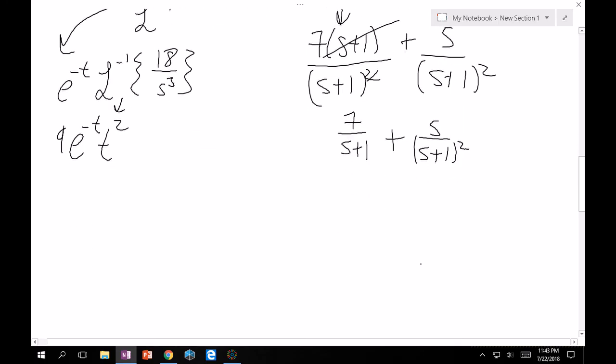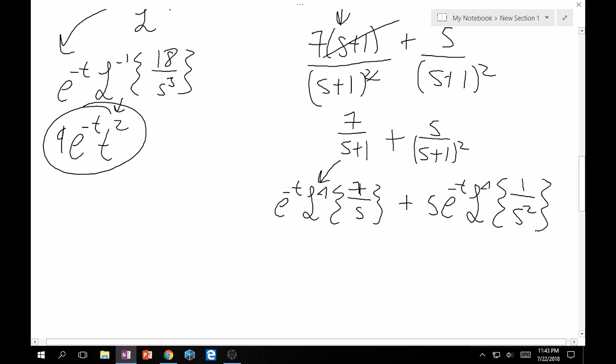This yields 7 over s plus 1 plus 5 over s plus 1 squared. And then these are also easy to take inverse Laplace of. 7 over s plus 1 is e to the minus t times inverse Laplace of 7 over s. And then this is also plus 5 e to the minus t inverse Laplace of 1 over s squared. And so, inverse Laplace of 7 over s is just 7. So this is going to be 7e to the minus t. And then this other one is just going to be t. Laplace of t is equal to 1 over s squared. Therefore, the inverse Laplace of 1 over s squared is equal to t. So this is plus 5t e minus t. And there we go.